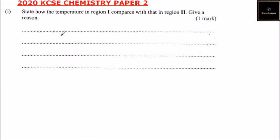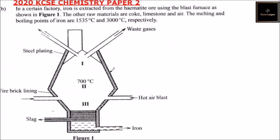State how the temperature in region 1 compares with that in region 2. Give a reason. So if you go back to our diagram, this is region 1 and this is region 2. We can say temperature in region 1 is lower than region 2. The reason is the raw materials are not preheated, and region 2 is nearer to the hot air blast than region 1.